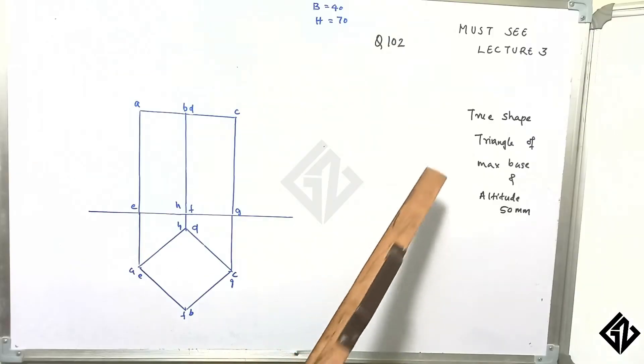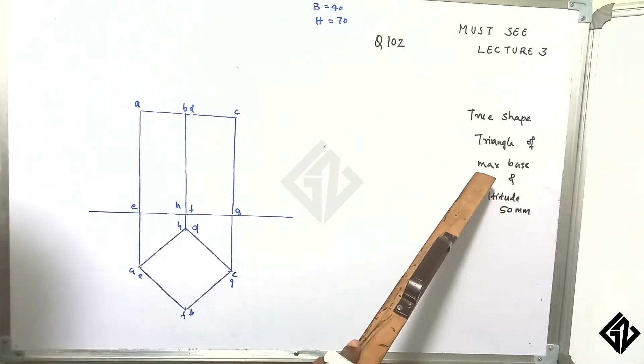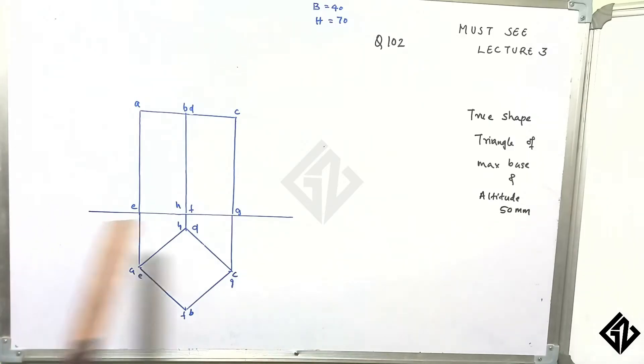The true shape is a triangle of maximum base and altitude 50. This is what we call maximum base - a triangle with maximum base and altitude 50.